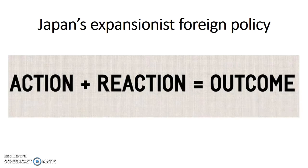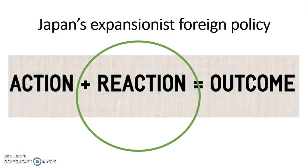We move on to our second factor: Japan's expansionist policy. Japan's expansionist policy can be seen as a cause on its own — it is because of this policy that World War II occurred — or it can be seen as a reaction to the economic crisis in Japan, which caused Japan's expansionist foreign policy, leading to the outbreak of World War II. It is up to you how you decide to frame this factor as your point or your explanation.